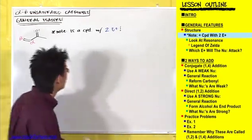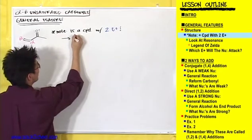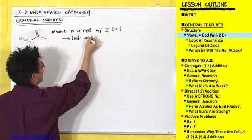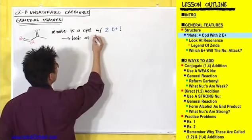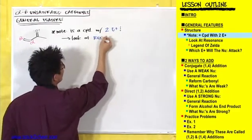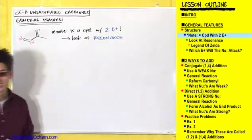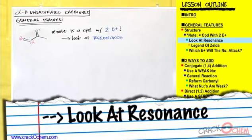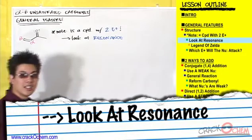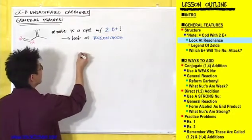But where is the second electrophile coming from? In order to find the second electrophile, you have to look at the resonance structures for this compound. So look at the resonance structures.